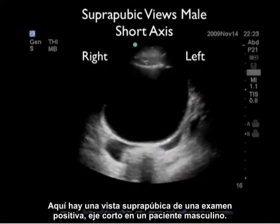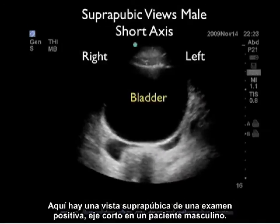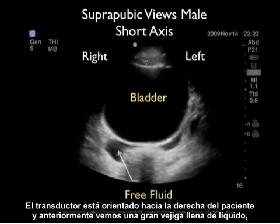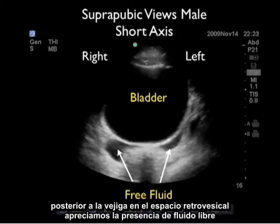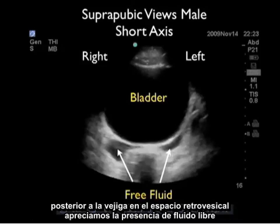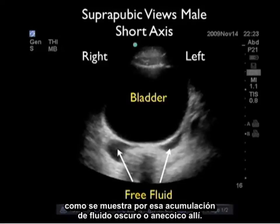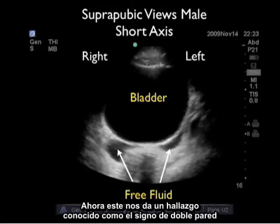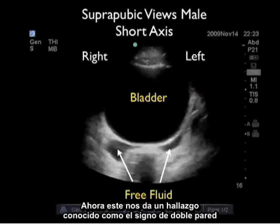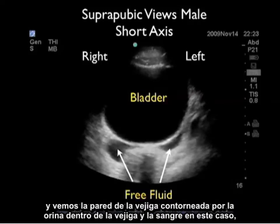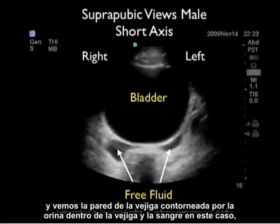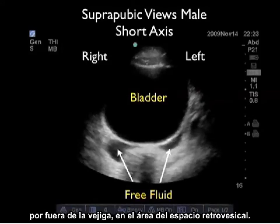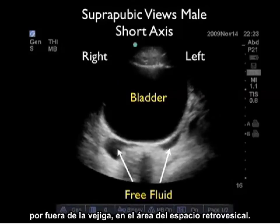Here's a positive examination, suprapubic view, short axis in a male. The probe is oriented towards the patient's right and anteriorly we see a large fluid-filled bladder. Posterior to the bladder in the retrovesical space, we appreciate the presence of free fluid as shown by that dark or anechoic fluid collection. This gives a finding known as the double wall sign — we see the wall of the bladder outlined by the urine inside the bladder and the blood outside the bladder in the area of the retrovesical space.